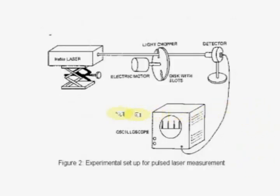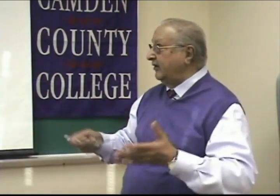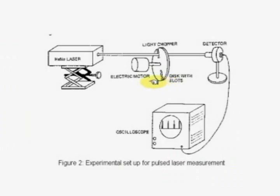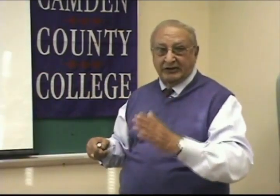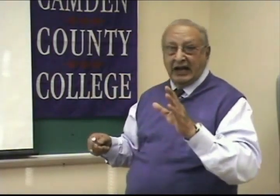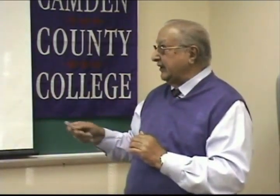Here is the experimental setup we will be seeing in a few minutes. We have a CW laser — such as a helium-neon or a diode — we can choose anything we like. We have a chopper whose speed can be varied so that the beam can be cut a number of times per second, producing the pulses. Since the choppers have nice rectangular serrations, we get nice pulses one after the other. Then we have a detector connected to an oscilloscope.